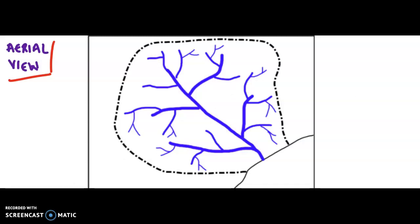Just to highlight something very quickly, before I jump to the definition of drainage basins and watershed: this area on the screen is the sea. All rivers eventually merge and they lead or drain out into the sea. That is actually where the mouth of the river exists.